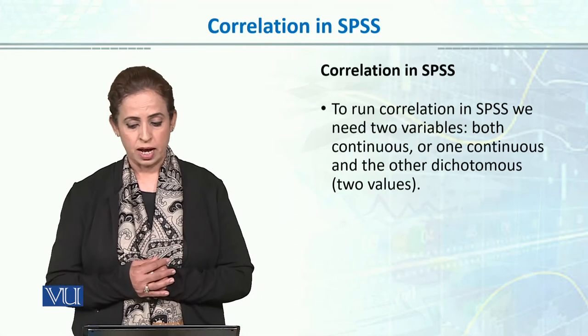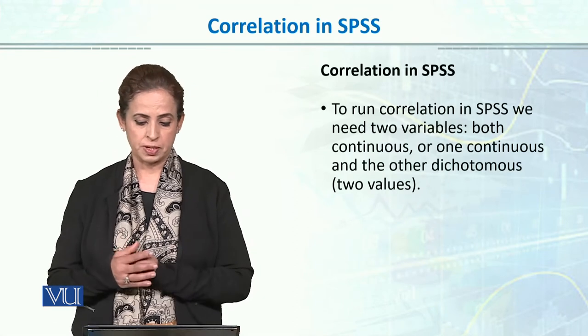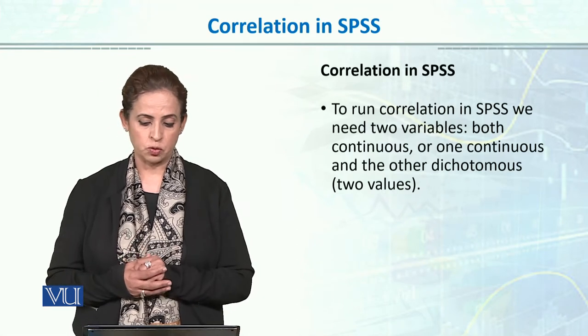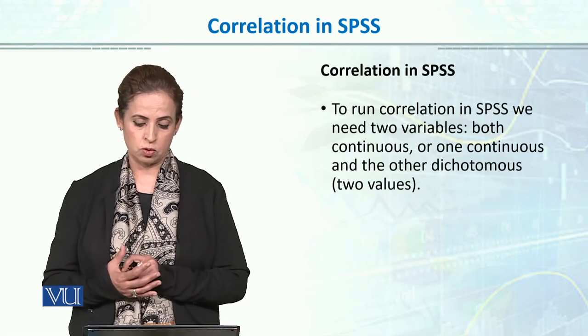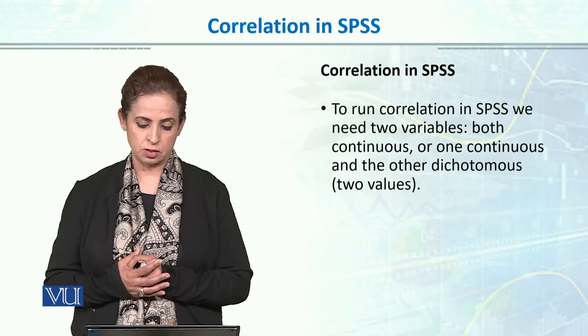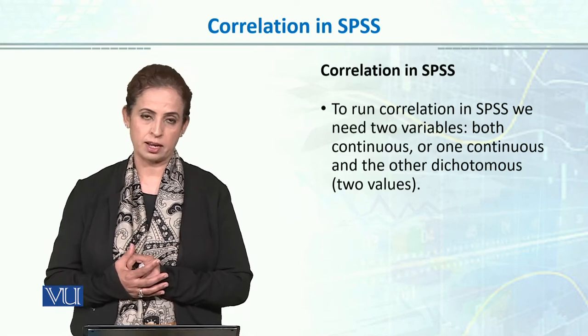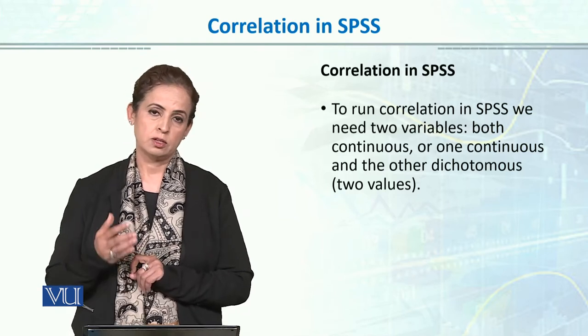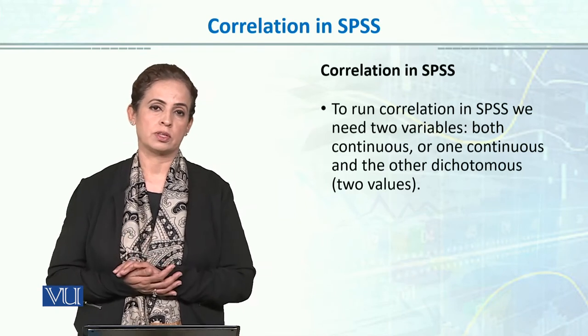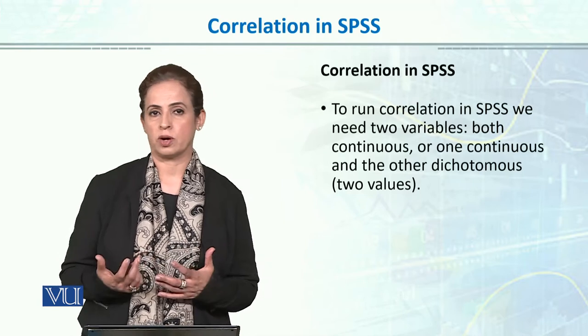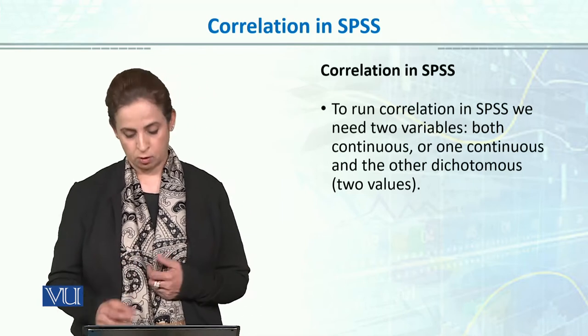To run the correlation in SPSS, we need two variables — both continuous, or one continuous and one dichotomous. Mostly both are continuous, but sometimes one continuous and one dichotomous variable is used.